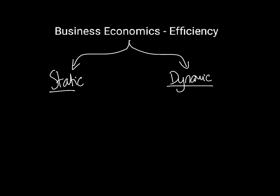Static efficiency is binary — either you are statically efficient or you are not; there's no in-between stage. Dynamic efficiency is slightly different: it refers to changing efficiencies over time, so it's a more open-ended concept. Within static efficiency, there are three particular types relevant in business economics.